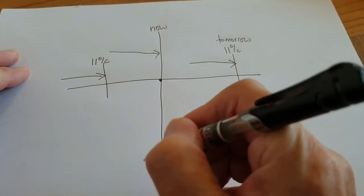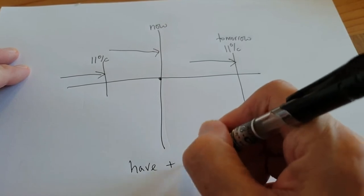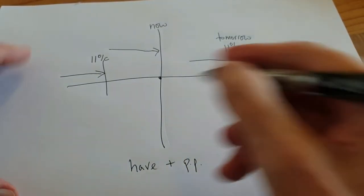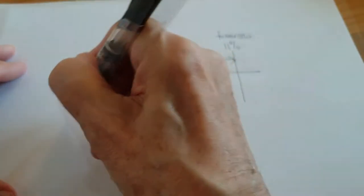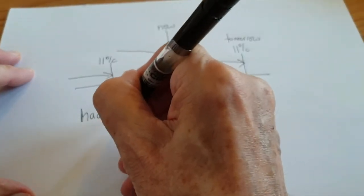To recap, present perfect have plus the past participle, the third form. Past perfect had plus the past participle.